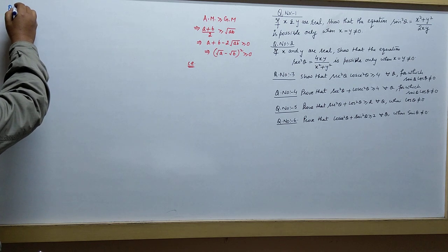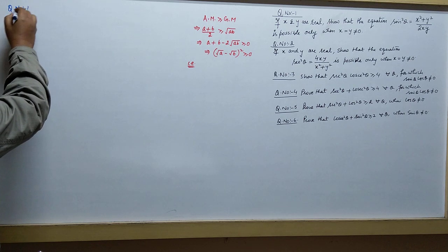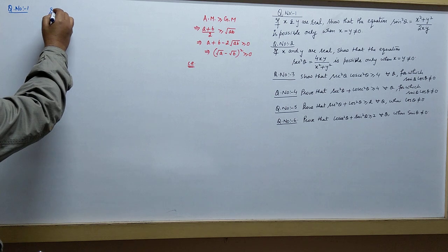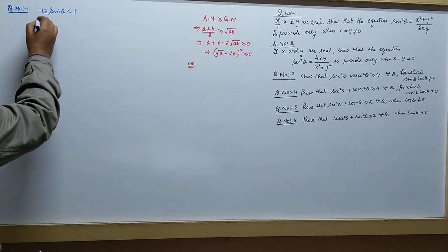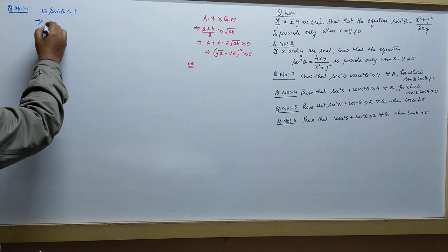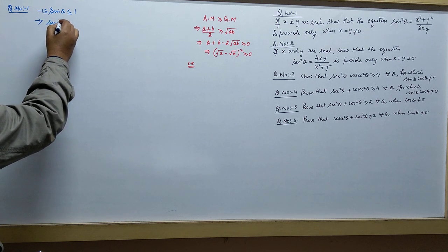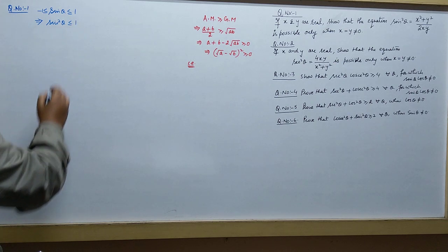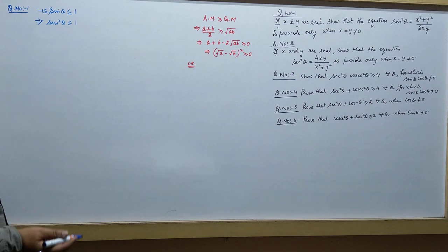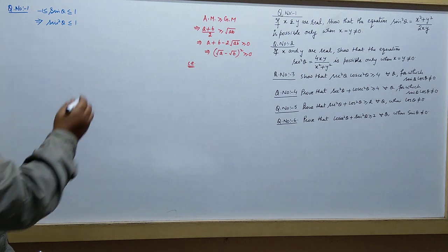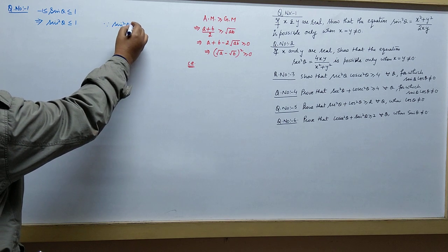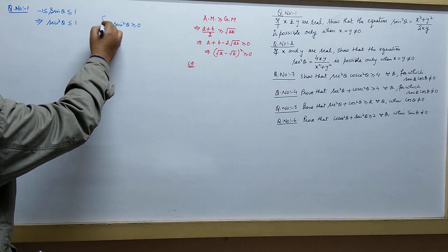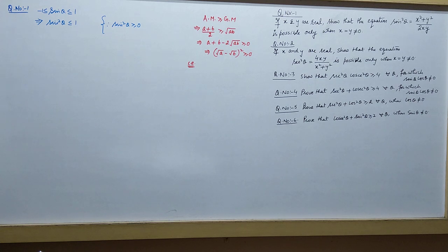Taking question number 1. You know that sin theta lies between -1 and 1. If you are squaring on both sides, it means sin squared theta is always less than or equal to 1, and greater than or equal to 0. We will write that sin squared theta is always greater than or equal to 0, because these are square quantities.